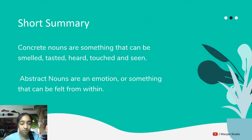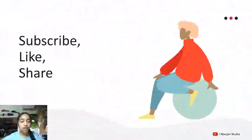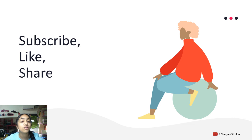Just a short summary: concrete nouns are something that can be smelled, tasted, heard, touched, and seen. Abstract nouns are an emotion or something that can be felt from within and not identified by the five senses. So guys, if you learned something new from this video, please remember to subscribe to my channel, hit the like button, and share this video with your family and friends. Thank you for watching. Goodbye!